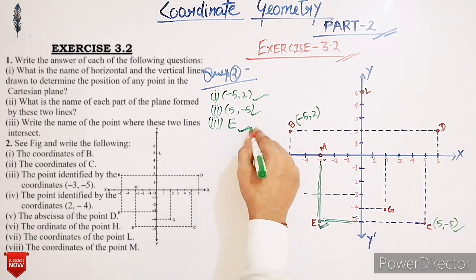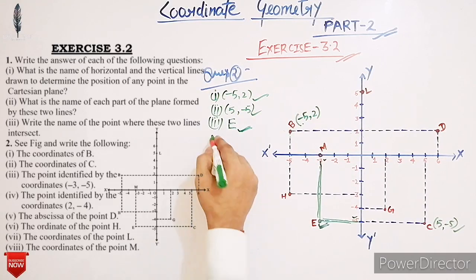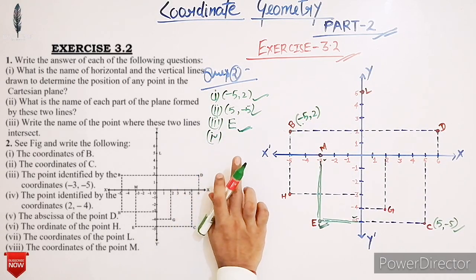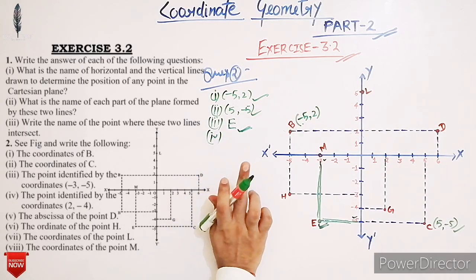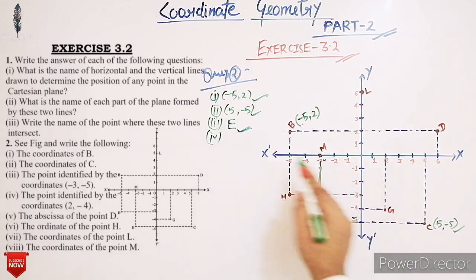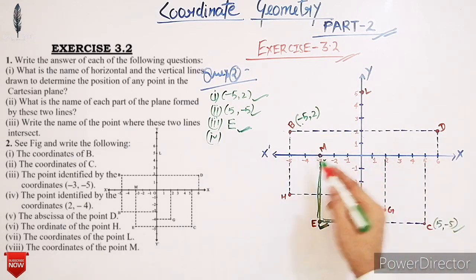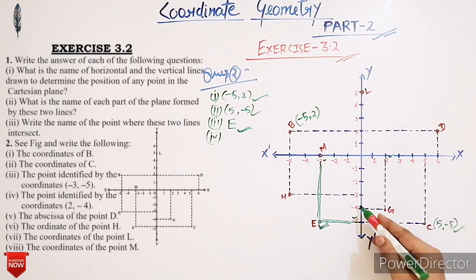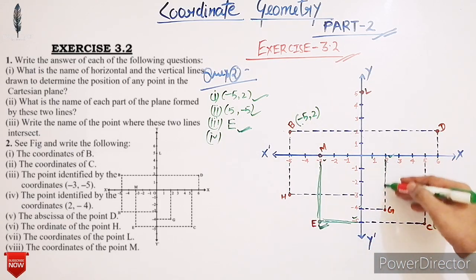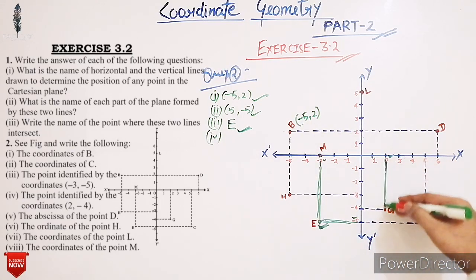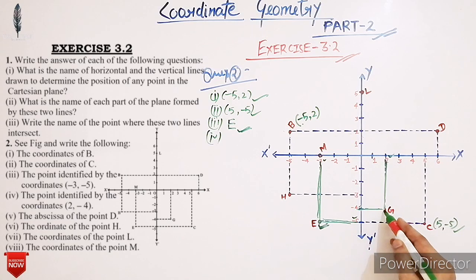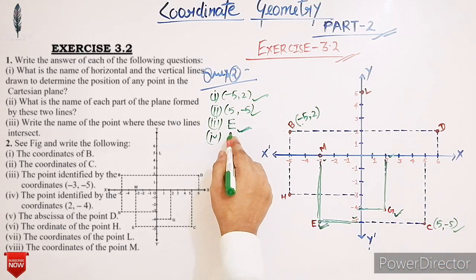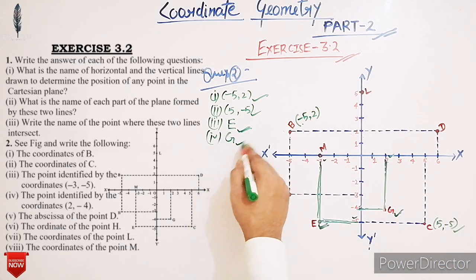Next, the point identified by the coordinates (2, -4). See here: 2 on the x-axis is here and -4 on the y-axis is here. So the point identified by the coordinates (2, -4) is point G.